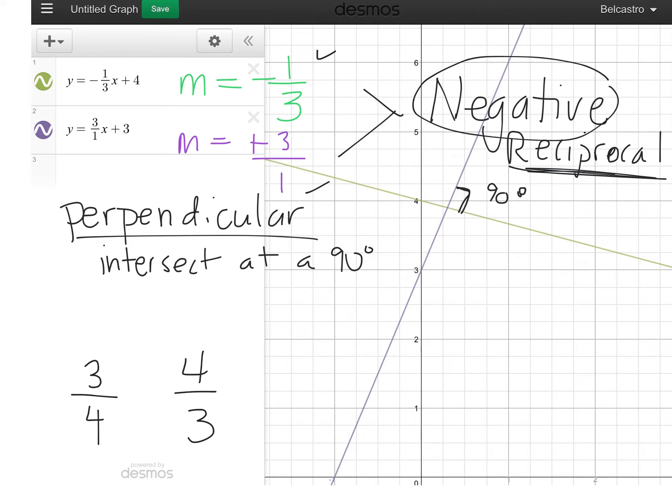If I put the word negative reciprocals, what does that mean? What did you notice about your slopes? One was negative and one was positive. So if this one's negative, then this one has to be positive.